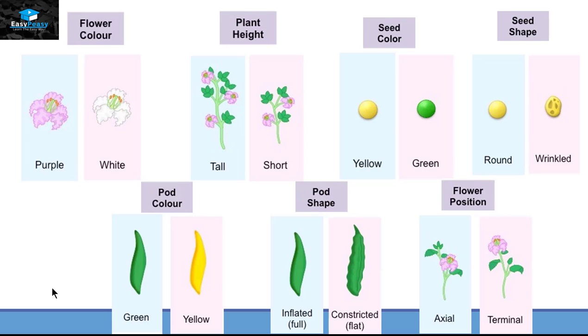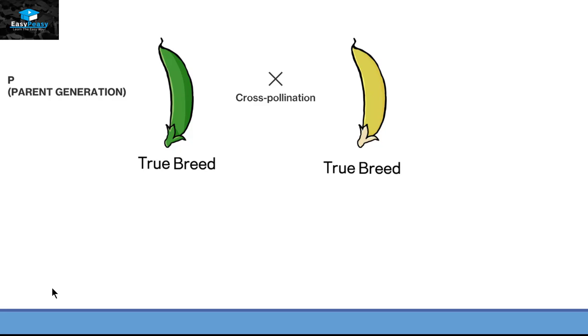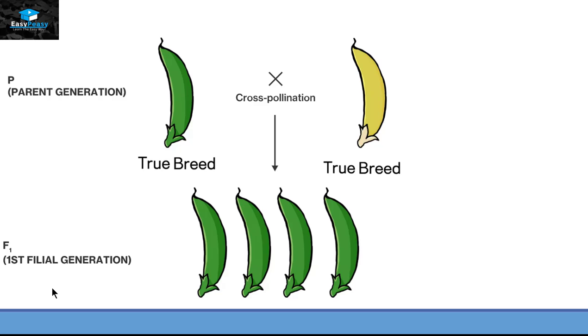We will take only one characteristic of this plant and that is the pod color in order to see what happened when Mendel did the cross fertilization. He took a true breed green pod and he fertilized it with a true breed yellow pod. In the first filial generation, all the plants have green pods as if the true breed yellow pod is not their parent.